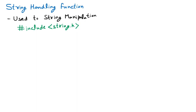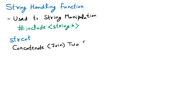The first function we are learning is `strcat`. The name signifies string concatenation — it is going to concatenate two strings. Concatenate means to join, so if you want to join two strings, that is possible with the help of this function. Let's understand with an example.